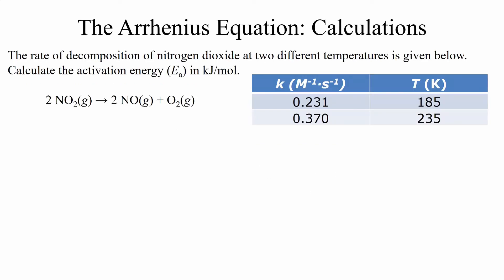So how do we use this? Well, here we've got some data on the decomposition of nitrogen dioxide into nitrogen monoxide and oxygen. We have two different rate constants that have been measured at two different temperatures.